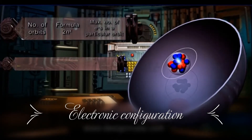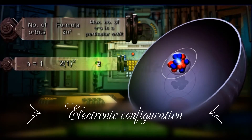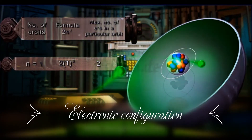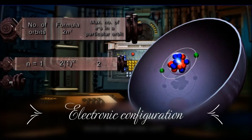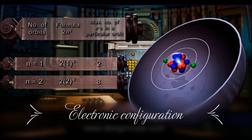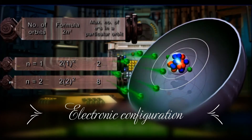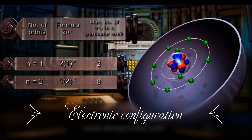For the first orbit, n is equal to 1. Therefore, 2n² is equal to 2. Hence, the maximum number of electrons that can be accommodated in the first orbit is 2. Similarly, for the second orbit, n is equal to 2. 2n² equals 8. Hence, the maximum number of electrons that can be accommodated in the second orbit is 8.